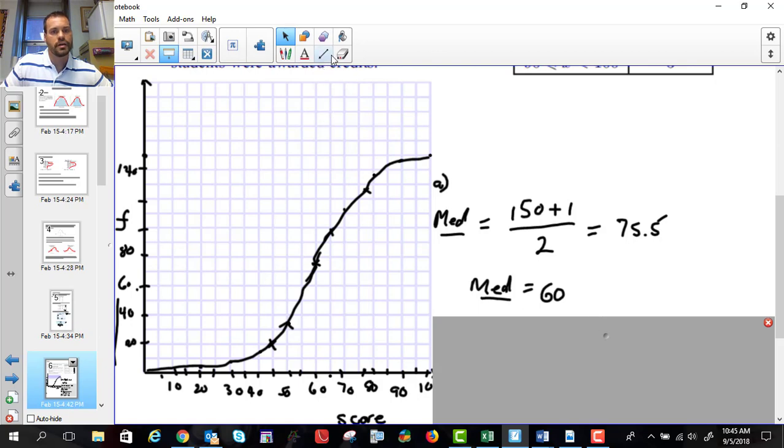If you want to on your graph, sometimes it's easier to actually draw over. So you go 75.5, and then you go down like that. It just might help you. You don't have to do that if you don't want to.